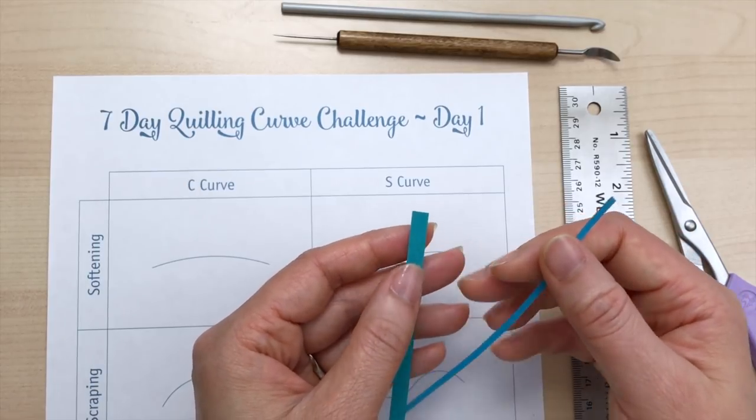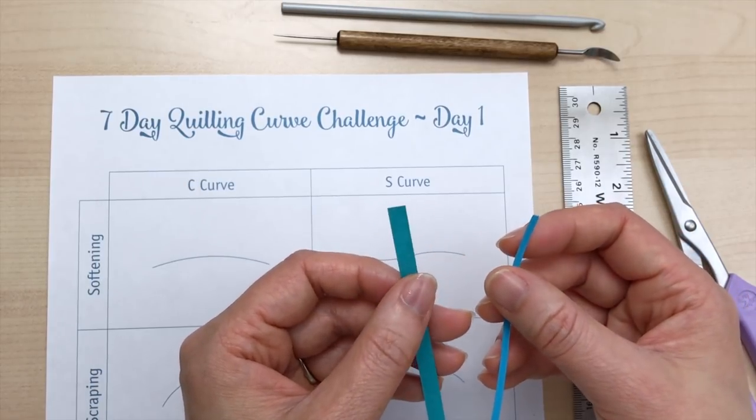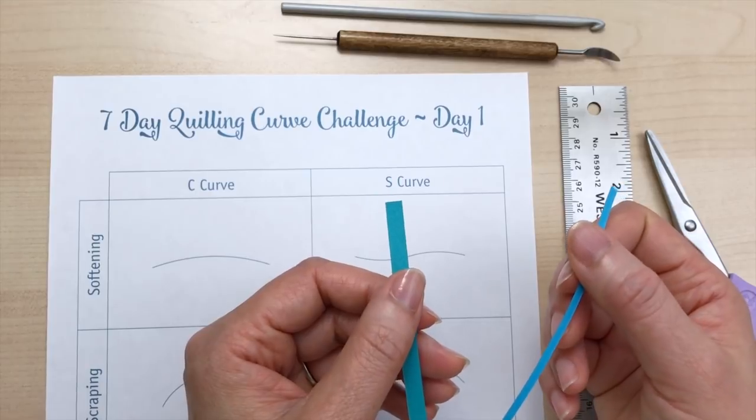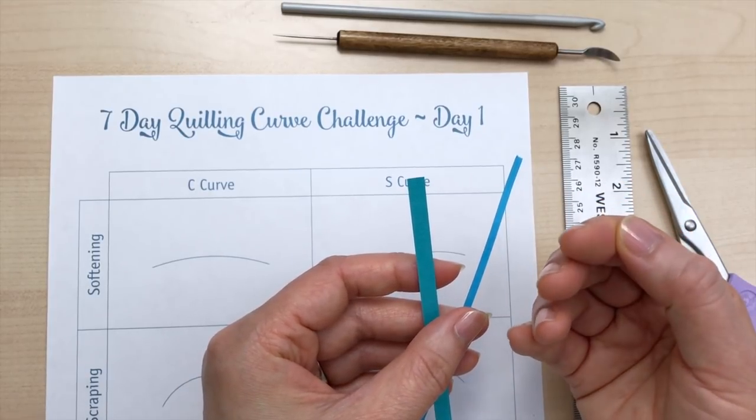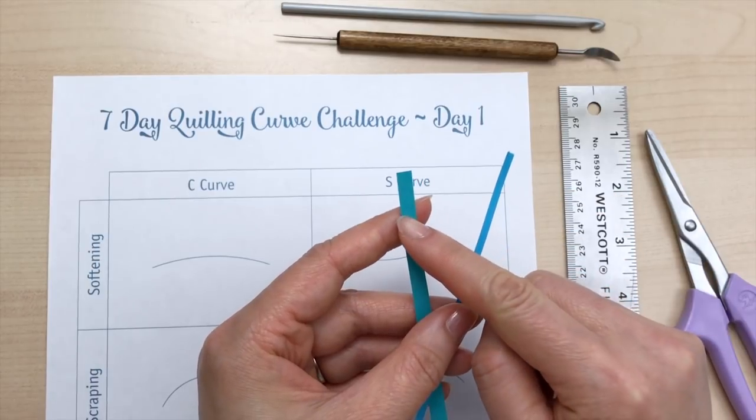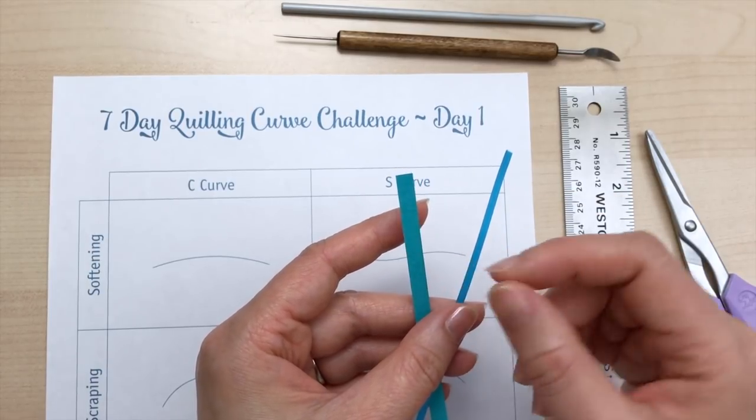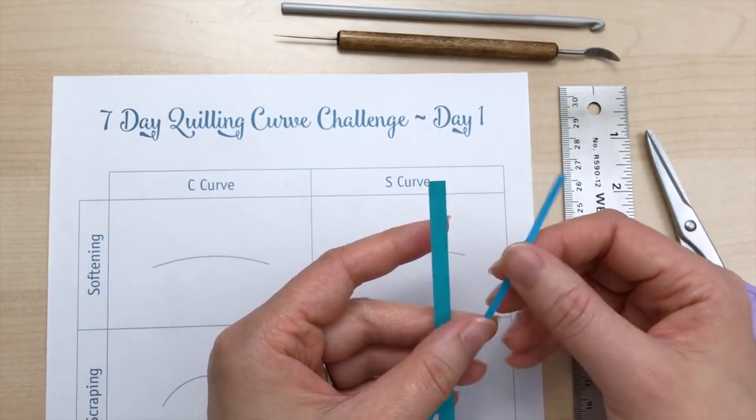I'm going to be using Katzen miton paper, which is a little bit thicker than conventional quilling paper. And it's good for your fingers to get to know different thicknesses, because some thicker sheets like this will require different tension as you're curving.